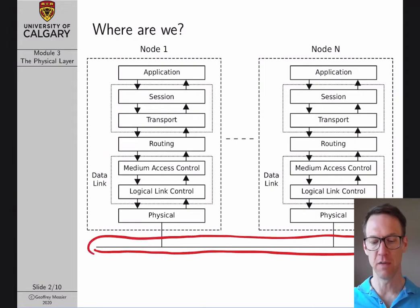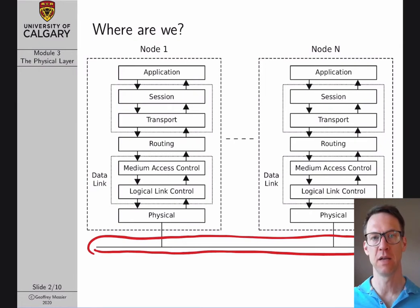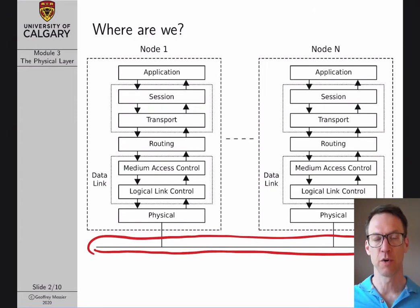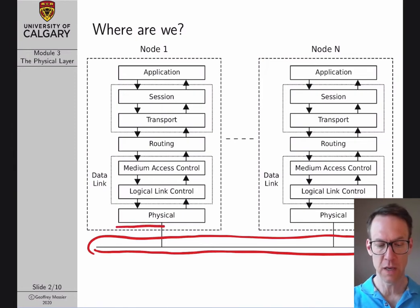Maybe this is a wire, maybe it's the wireless channel within a room. Every single device communicating in a network will be running its own copy of the protocol stack software. We talked about all the different layers at the end of module 2: the physical layer, the data link layer, routing, transport, session, and application layer. I've deliberately left the presentation layer out because it's not really used in most modern protocols. We're going to start right here at the bottom.